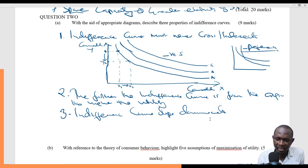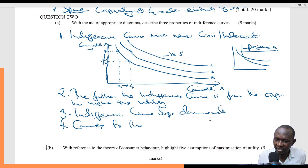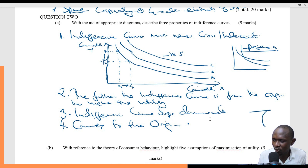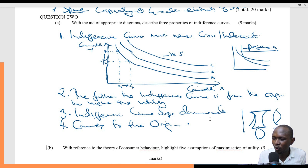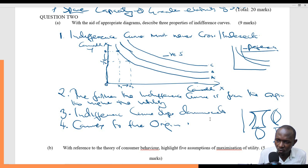The fourth property of indifference curves is that they are convex to the origin. You remember in physics there was something concave and something convex — concave is like this, and convex is like this. So the shape of an indifference curve is convex, meaning it bows outward toward the origin. This is the origin point zero, so it's convex to the origin.